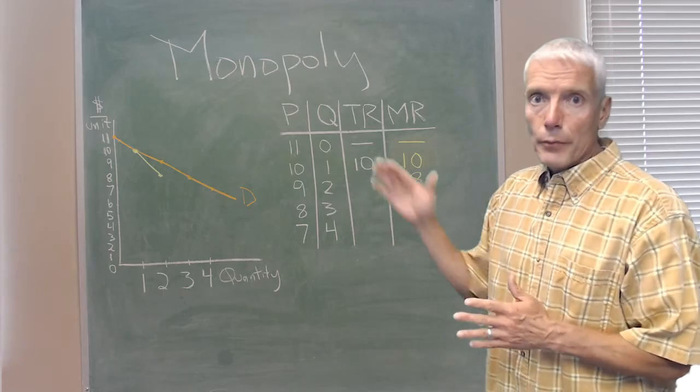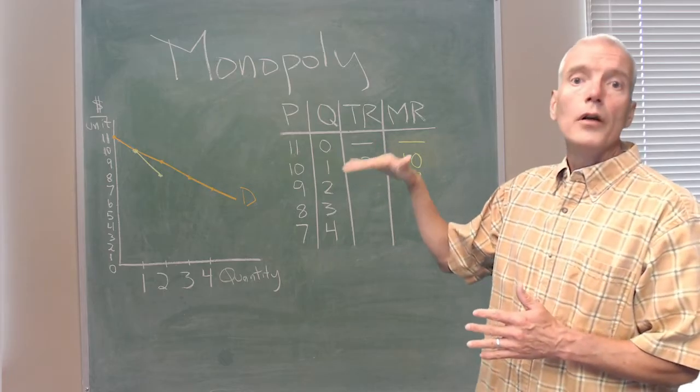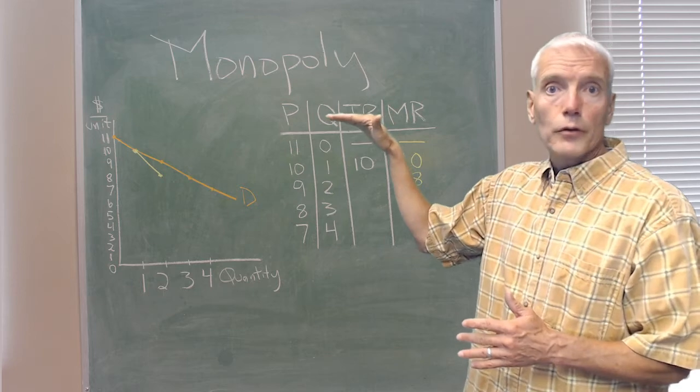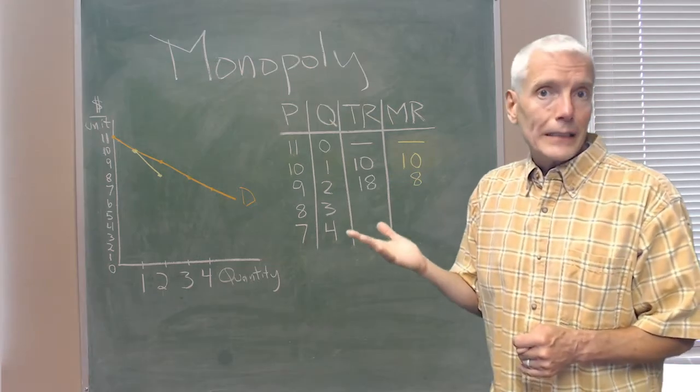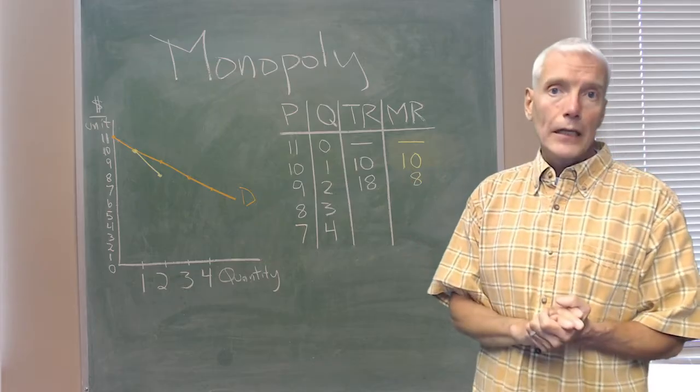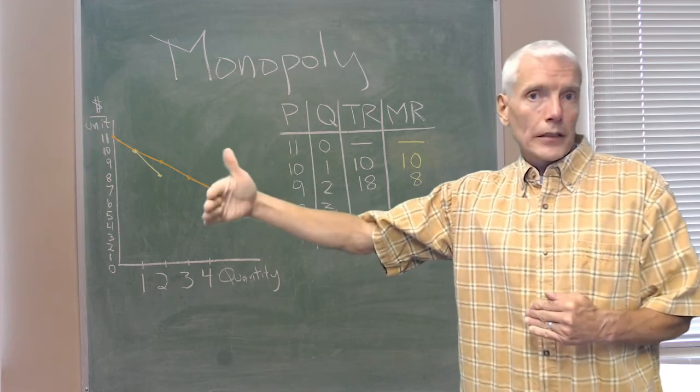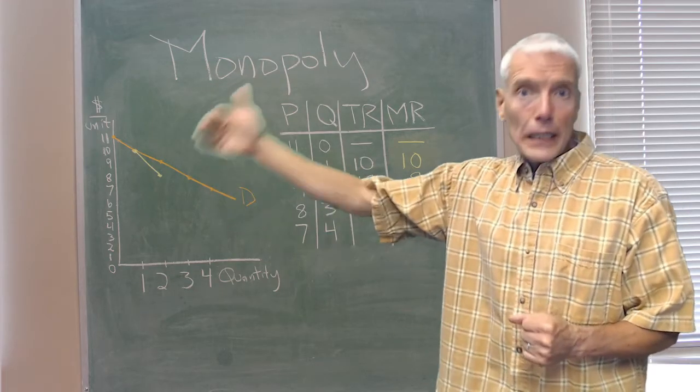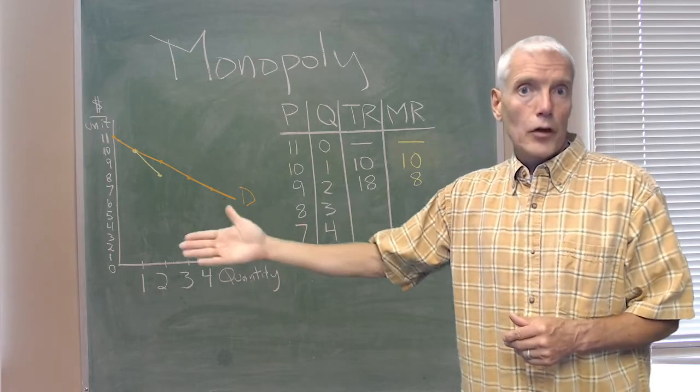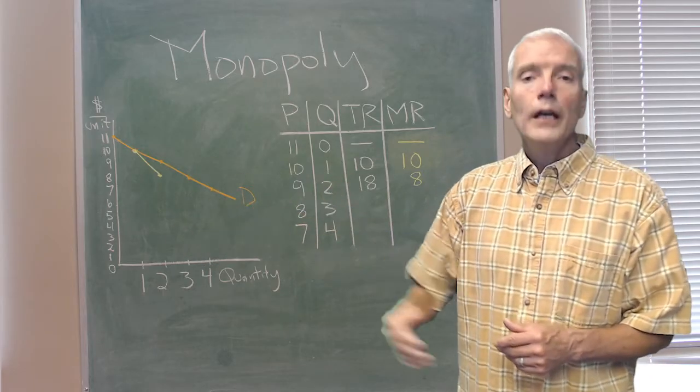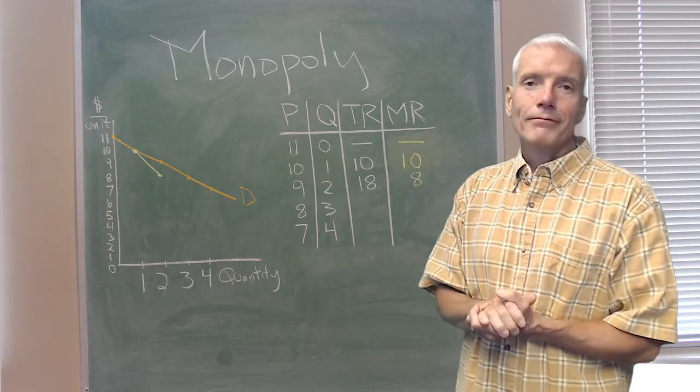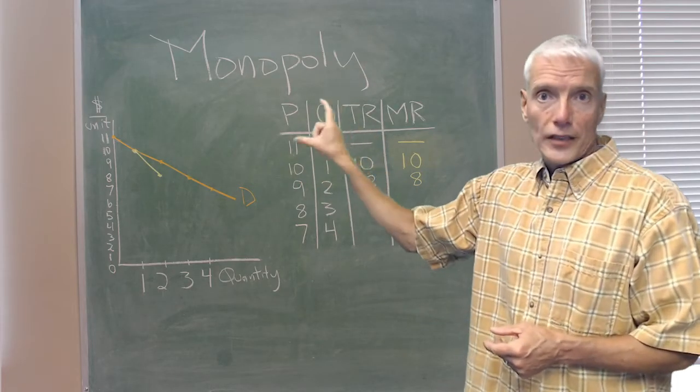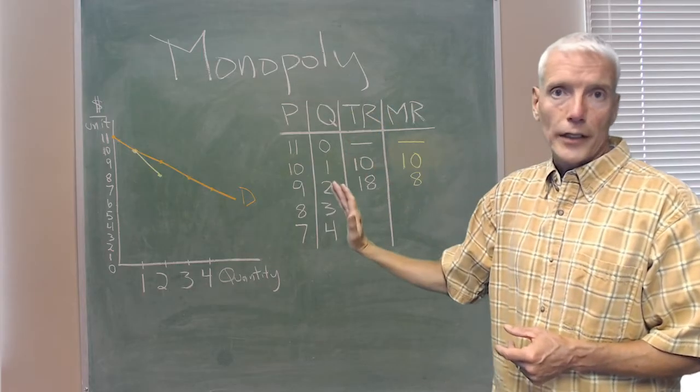Another way to look at that is to compare the total revenue with 2 with the total revenue from 1. Two units it gets 2 times 9 is $18. One unit it got $10. So the increment in total revenue, the increase in total revenue going from 1 unit to 2 is $8, lower than the price of $9. So the marginal revenue already is diverging from that demand curve that shows the price.